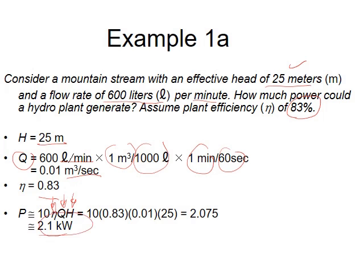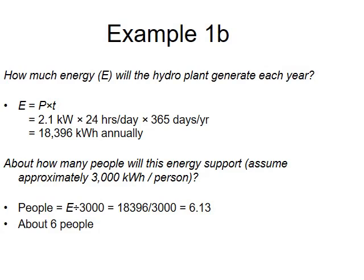The result is 2.1 kilowatts. To find the annual energy, multiply by time: 24 hours per day and 365 days per year. If one person consumes 3000 kilowatt-hours annually, dividing the total annual energy by 3000 gives approximately 6 — meaning this turbine could supply about 6 persons.